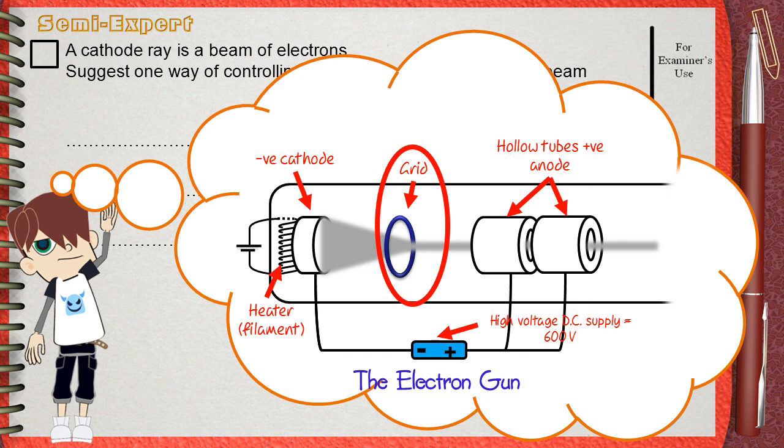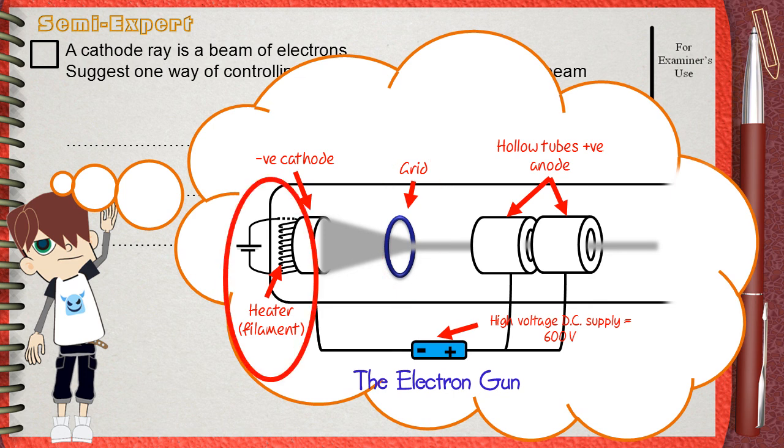So the main method is controlling the negativity or the potential on the grid. But other methods can be used. The temperature of the heater filament can also control the number of electrons. As temperature increases, the number of electrons emitted from the cathode will also increase.